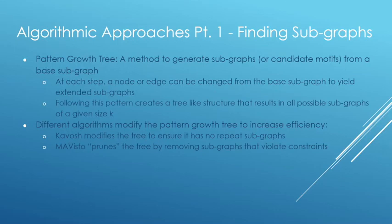So some notable algorithms increase this efficiency in finding the subgraphs. An algorithm called Kivosh modifies the tree so that there's no repeat subgraphs. This saves time because we're only going through unique subgraphs. And also an algorithm called Movisto removes subgraphs that are obviously not going to pass our frequency test or our statistical significance test. So this saves us time later.